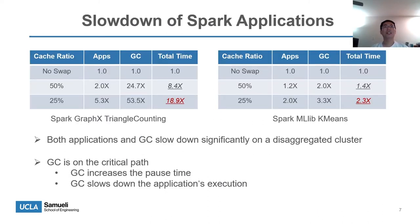This slide shows the performance of Spark applications running on the disaggregated cluster. The execution time is normalized to the baseline, which has no swap operations. The cache ratio means the percentage of CPU local cache to total memory. From the chart, we can see that for the 25% cache ratio, both application and GC slow down significantly. As analyzed, GC is on the critical path: first, GC increases the pause time; second, GC slows down the application's execution time.